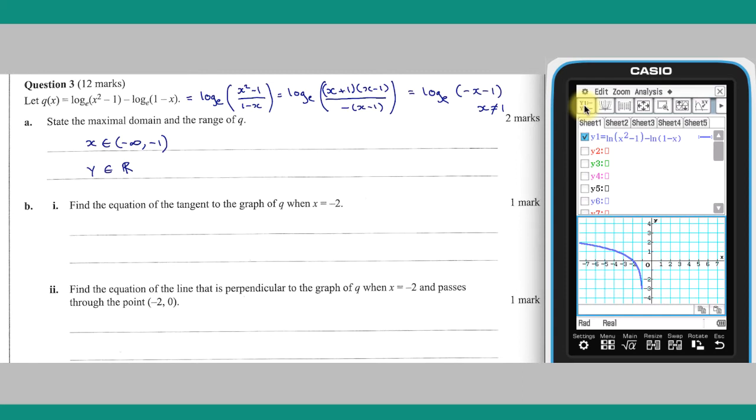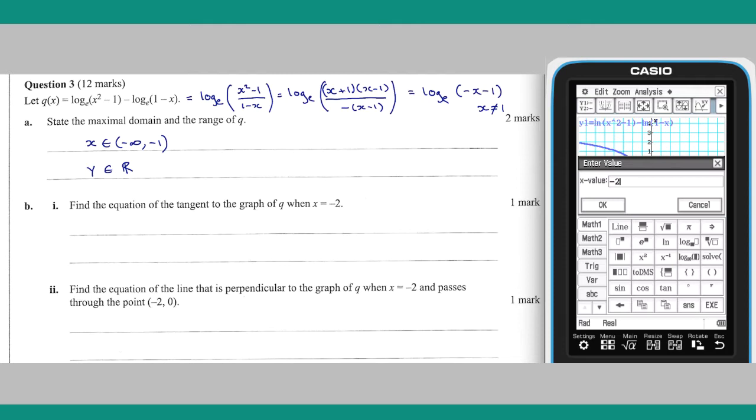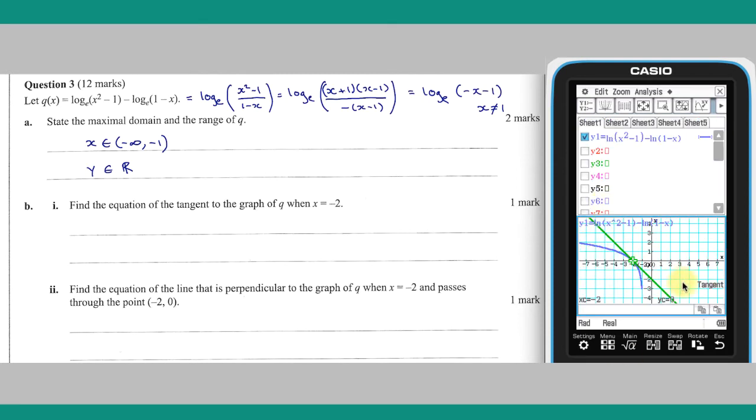The equation of the tangent to the graph of Q, when X equals minus 2, can be calculated by tapping analysis, then sketch, and choosing tangent. Type in the X value of minus 2, tap OK to enter the value, then execute to complete the calculation.